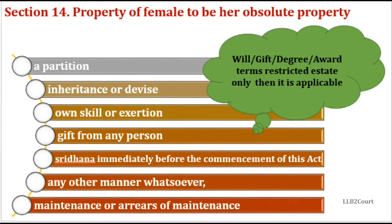Before this act, whenever a property passed to a male, the property was absolute property. But in the case of females, it was a limited estate. Section 14 says it is no more a limited estate — the property hereafter will be an absolute property.